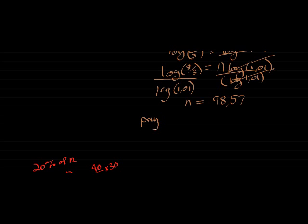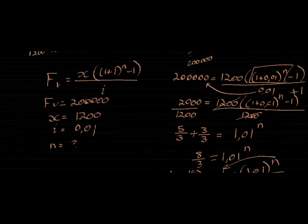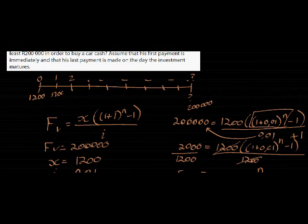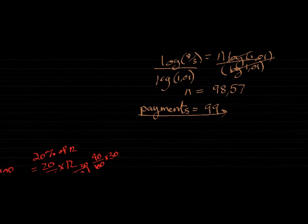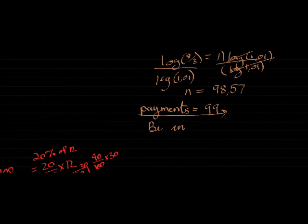So payments should be 99 payments. He's making 99 payments, even if it was 98.02. If he makes 98 payments, he's not there yet. He must make 99 payments. But he starts immediately. So he's already made one payment when he starts.